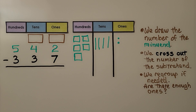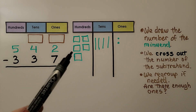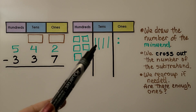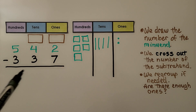Let's try it again. We have 542 minus 337. We draw the minuend: five hundreds, four tens, two ones. And we cross out the number of the subtrahend, 337, and regroup if needed.